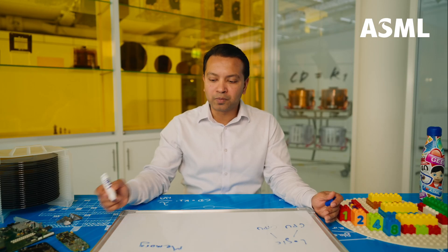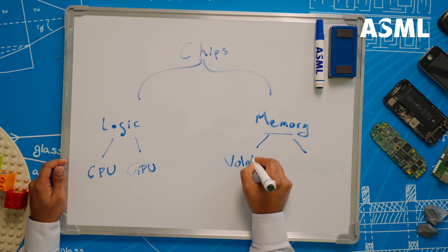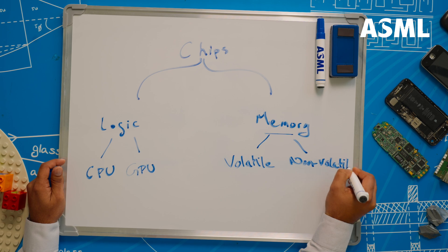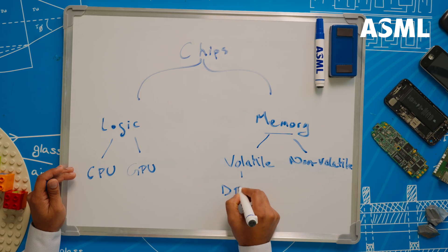The other big family is called memory. These chips store and access bits of information across billions of memory cells. They come in a few flavors, called volatile or non-volatile. Volatile memory chips save data only when the electronic device is powered on. The most common type of volatile memory is DRAM, or dynamic random access memory, which is basically like the working memory of a computer system, helping the computer to run programs. DRAM needs to be fast, because it needs to keep up with the blazing fast CPU or the GPU.